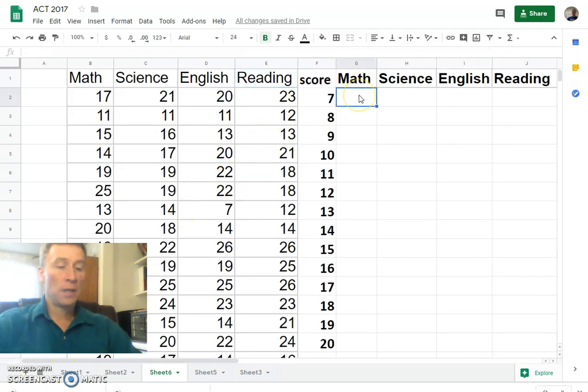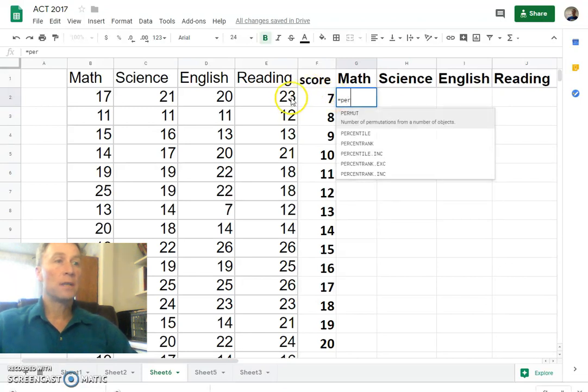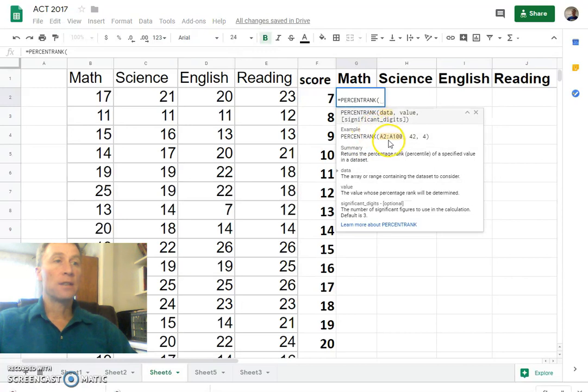So if we type equals, to do a calculation, PERCENTRANK for percentile rank. Let's select that one. It tells us how to set it up: data, value, and then significant digits.